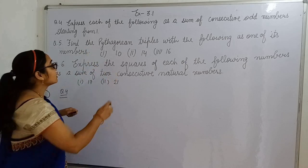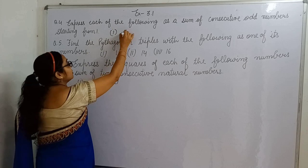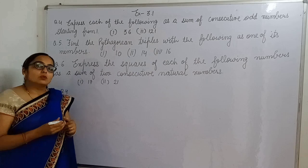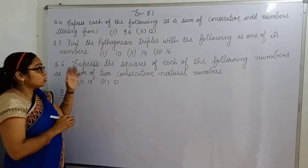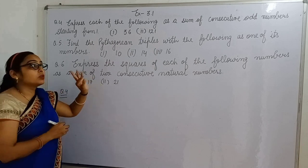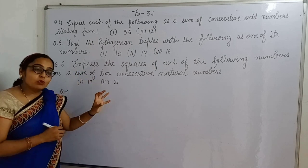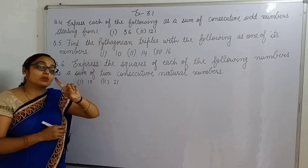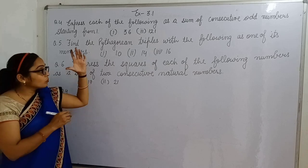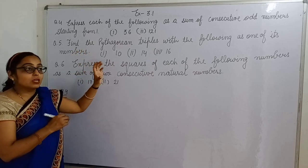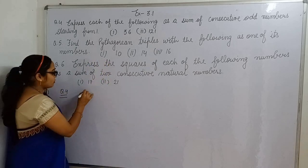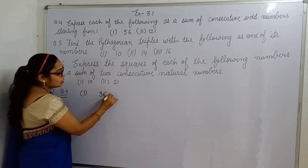So, these numbers are, let's take 36, second part is 121. Students, they have to express the sum of consecutive odd numbers starting from one. This is also our property that sum of consecutive odd numbers. Let's take first part 36.